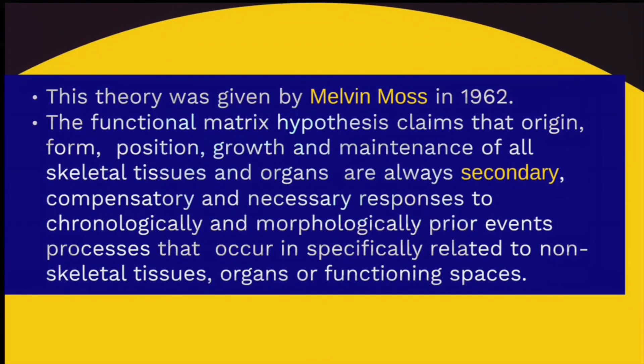The definition is that the origin, form, position, growth, and maintenance of all skeletal tissue and organs are always secondary. The growth of skeletal tissue is secondary, compensatory, and a necessary response to the chronological and morphological prior processes that occur in non-skeletal tissue. In simple words: first the soft tissue grows, and in response to the functional need of the surrounding soft tissue, the skeletal growth occurs secondarily.